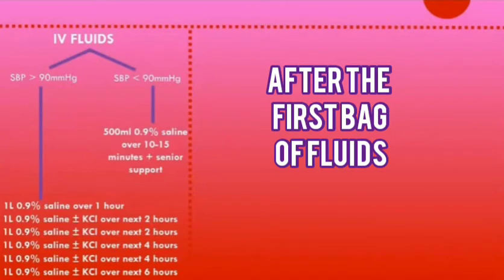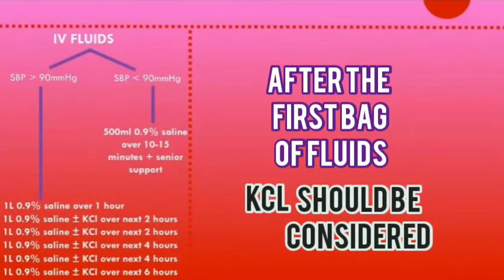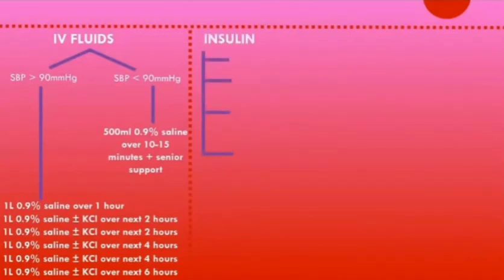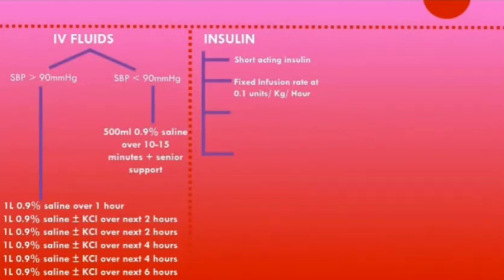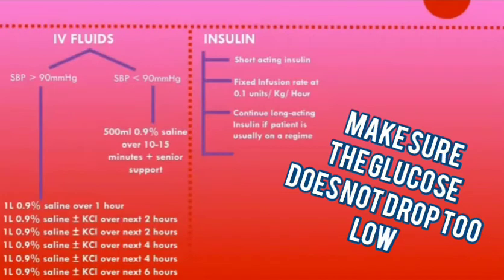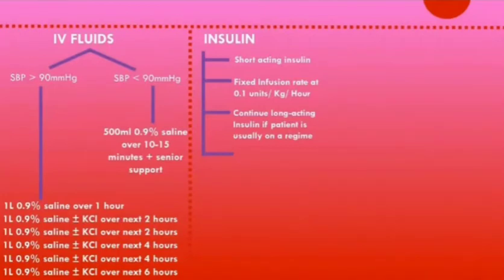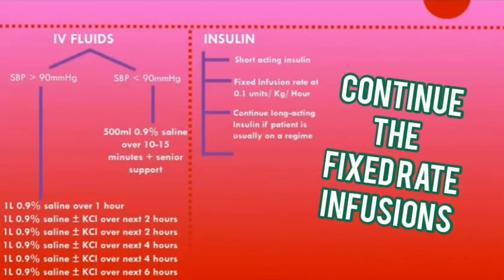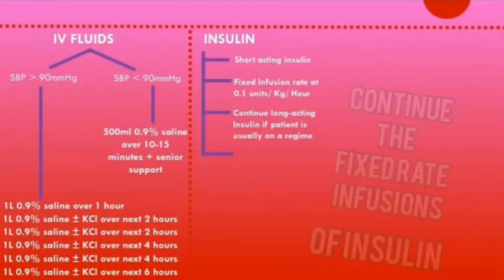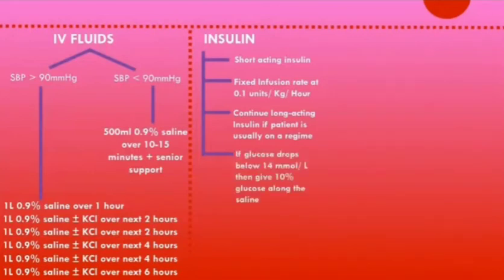After the first bag of fluids, potassium replacement in the form of potassium chloride should be considered added to the fluid bags. Insulin is given as a short-acting insulin at a fixed rate infusion of 0.1 units per kilogram per hour — for a 70 kg man that is 7 units per hour. It's important to continue long-acting insulin if the patient is usually on one. If blood glucose drops below 14 mmol/L, 10% glucose can be given alongside normal saline to prevent hypoglycemia while continuing the fixed rate insulin infusion to resolve the ketoacidosis.